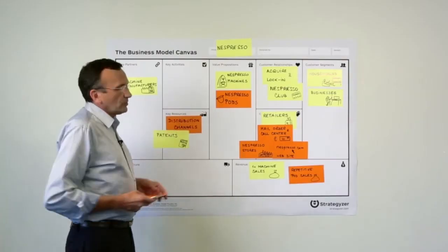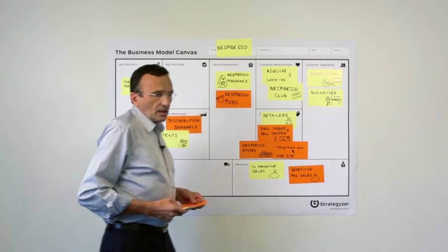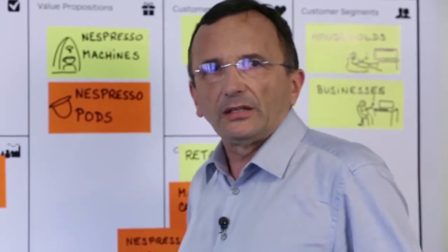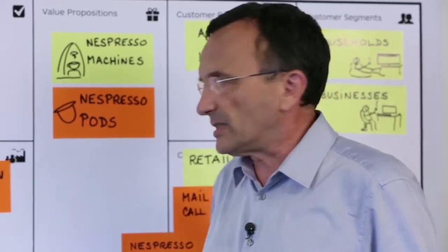This is for the right-hand side, the value side of the business model. On the left-hand side, on the backstage if you want, you have different resources and activities.